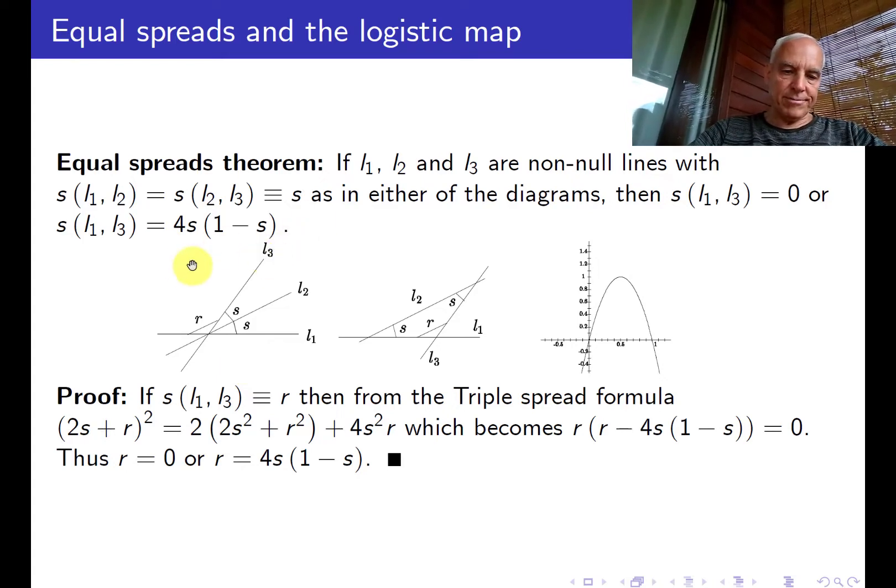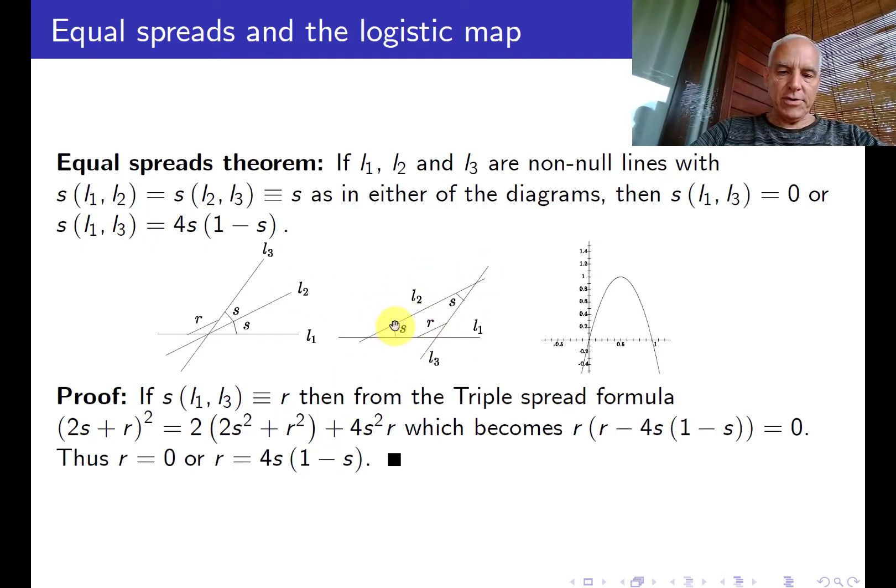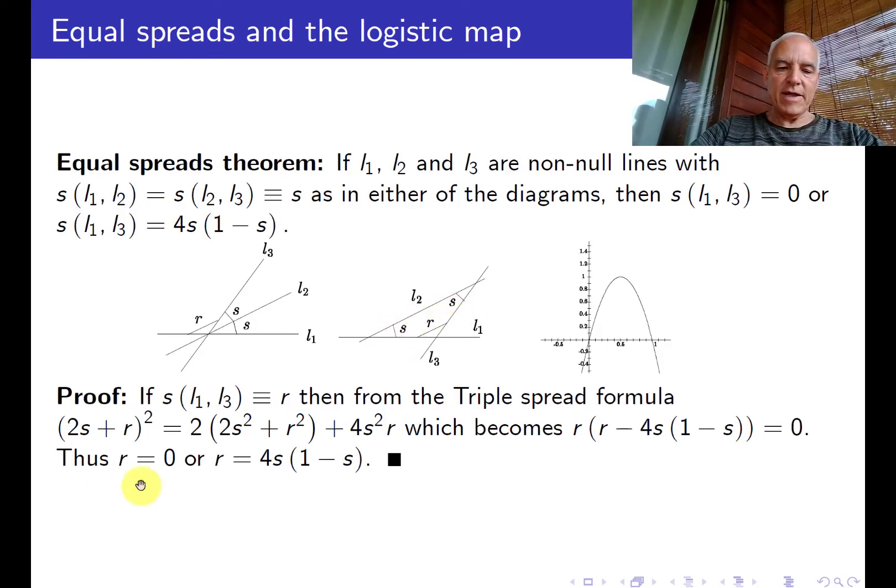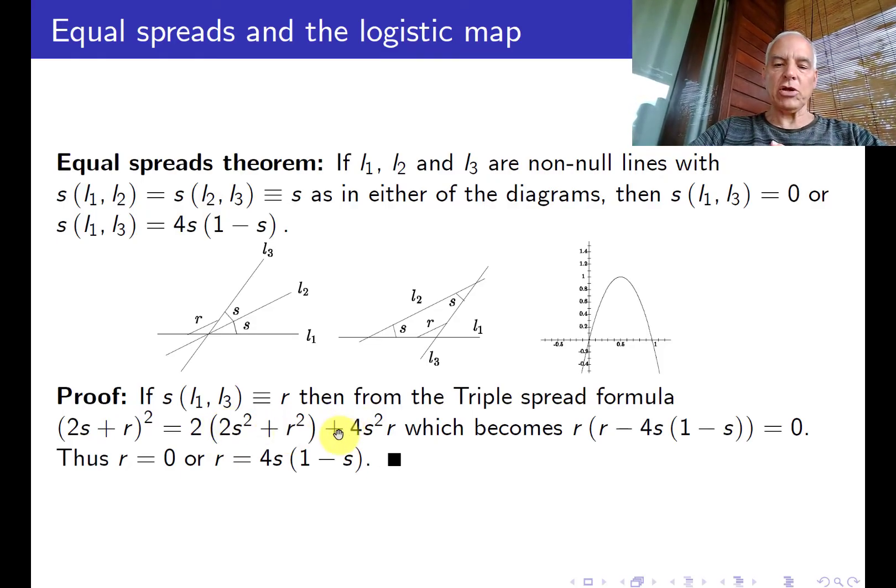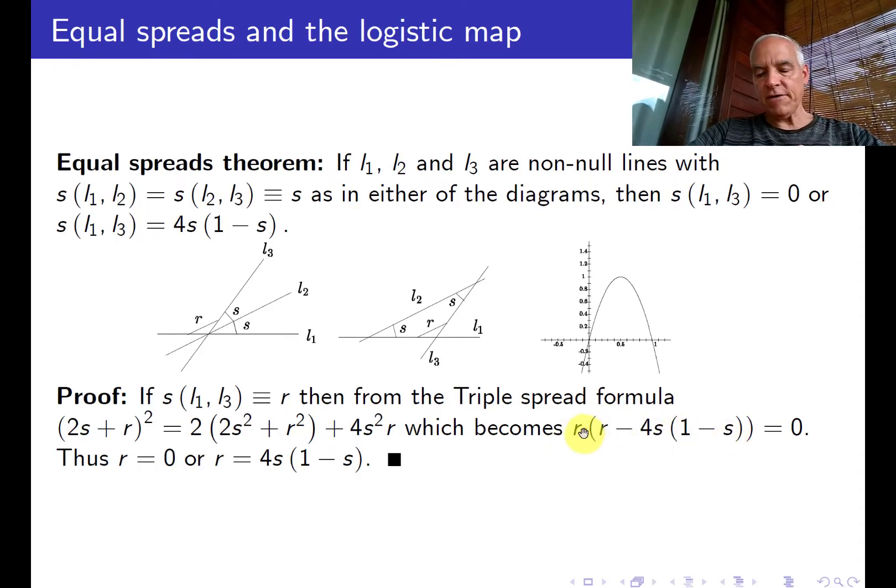So to prove that, suppose the spread S of L1 and L3 is R. Then from the triple spread formula which tells us the relationship formed by three lines, the sum of the spreads all squared, (2S + R)², equals two times the sum of the squares of the spreads, 2S² + R², plus this additional cubic term 4S²R. If you bring everything to one side and simplify, this factors as R(R - 4S(1-S)).